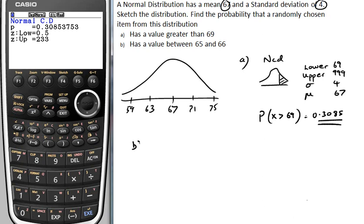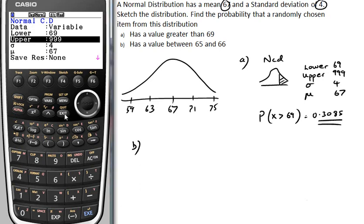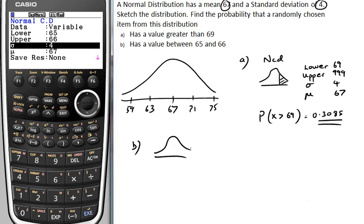Part B. How will you find the value has a value between 65 and 66? Let's exit from that. Don't have to go any further than this. We simply put in a lower value, which of course in this case will be 65, and we put in an upper value, in this case 66. Our standard deviation is the same, our mean is the same. So having put those values in, we better actually tell the examiner we know what we're doing. 66 is just below the mean, so give them a diagram that makes some sense. You're looking for this probability here.